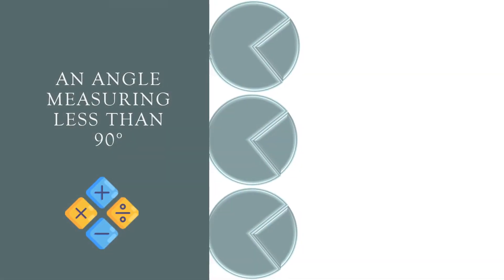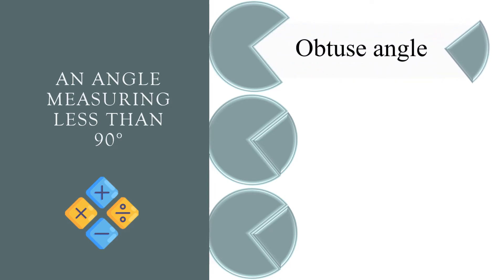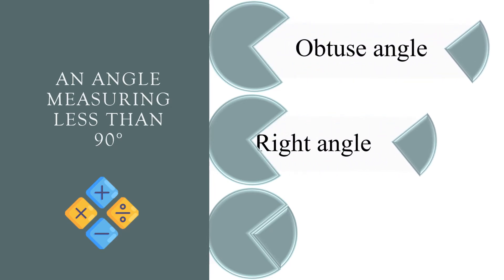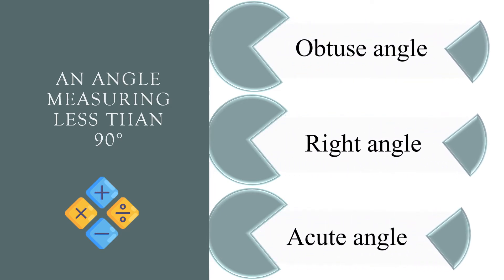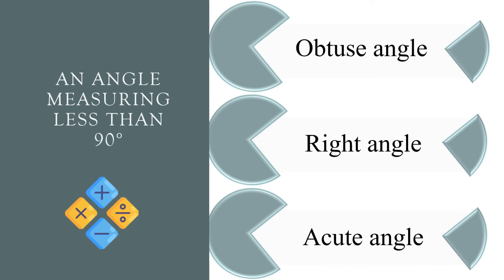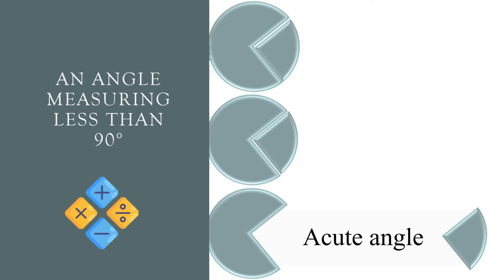An angle measuring less than 90 degrees. Obtuse angle, right angle, or acute angle? The correct answer is acute angle.